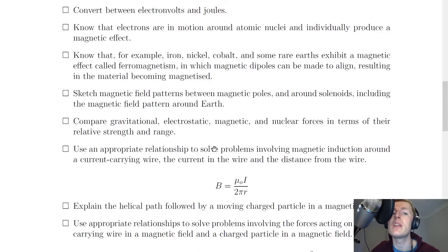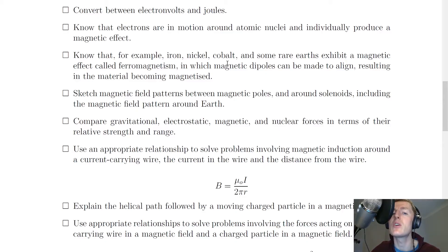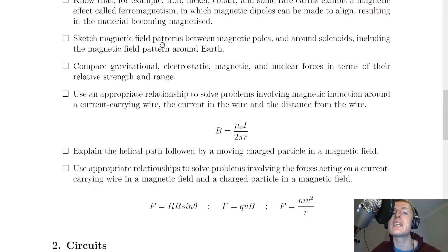For magnetic fields, you need to know that electrons in motion around atomic nuclei individually produce a magnetic effect, producing things called dipole moments. You also need to know that iron, nickel, cobalt, and some rare earths exhibit a magnetic effect called ferromagnetism, in which magnetic dipoles can be made to align, resulting in the material becoming magnetized. You should be able to sketch magnetic field patterns between magnetic poles and around solenoids, including the magnetic field pattern around the Earth.